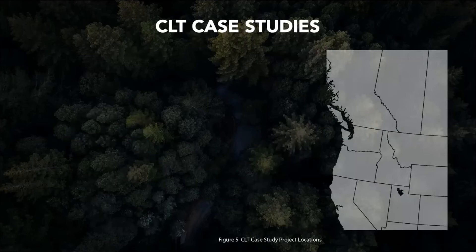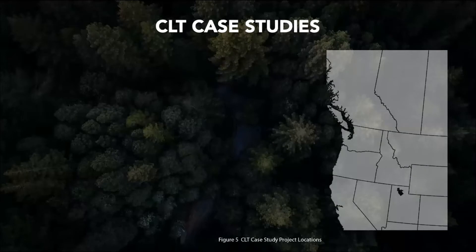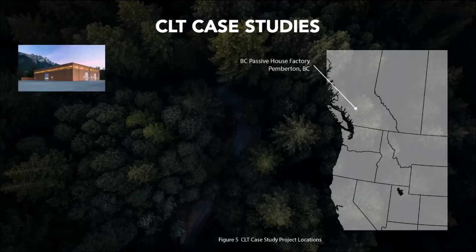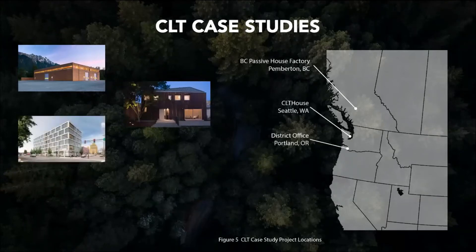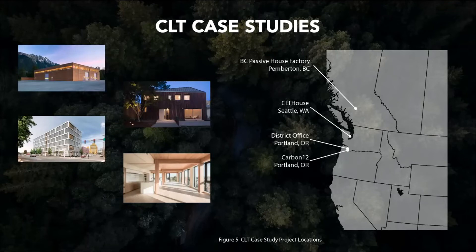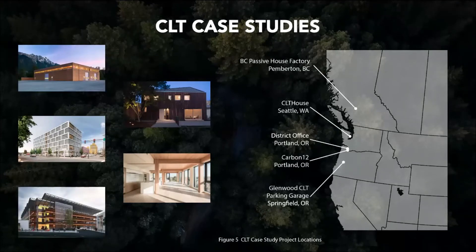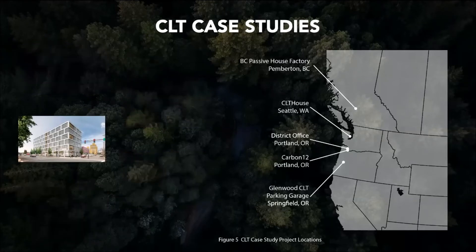We applied this base understanding to different case studies throughout the Pacific Northwest, based on contacts we had with recently completed or under-development projects. We looked at a variety of typologies: the BC Passive House factory in Pemberton, British Columbia (industrial); a single-family residential building in Seattle, the CLT House; District Office in Portland (commercial); Carbon 12 in Portland (mixed-use commercial and residential); and the Glenwood CLT parking garage in Springfield, Oregon. All are publicly and freely available at the link shared.